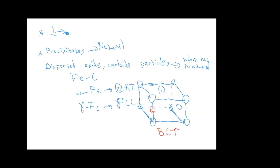After heat treatment we also see some cementite. What is cementite? It is iron three carbon — Fe₃C. This is the large particle we are talking about, like the dispersed oxide or carbide. This is a kind of precipitate which also affects the strength of a material.